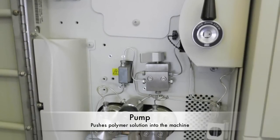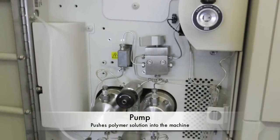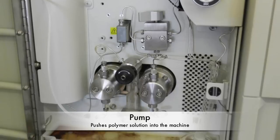The GPC has three main components. First, the pump is used to push the polymer solution and solvent, THF, or tetrahydrofuran, into the machine.